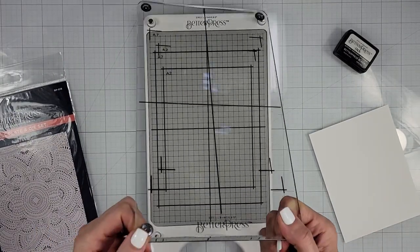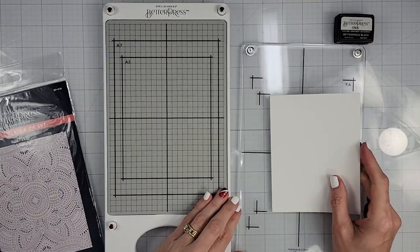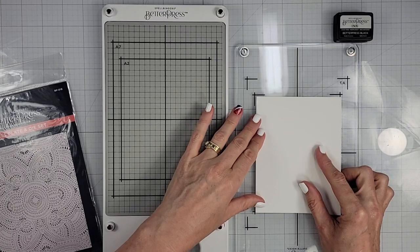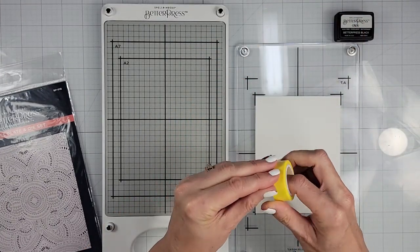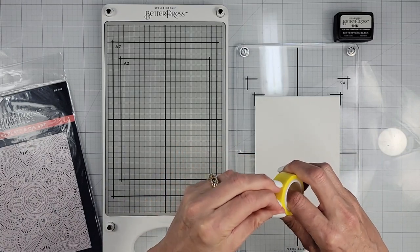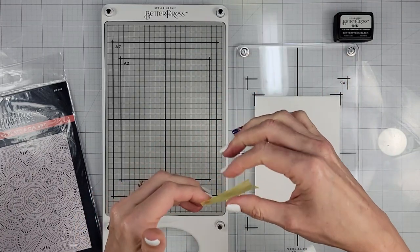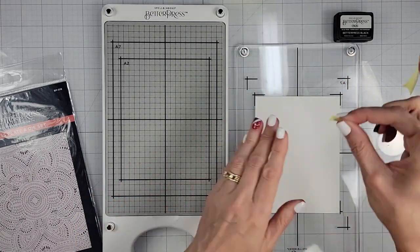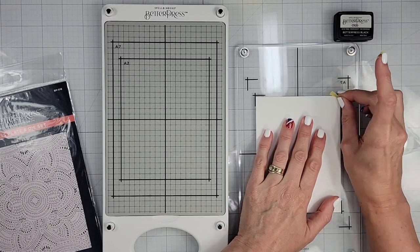We're going to take this off and set this to the side and I'm going to very carefully tape. I'm going to cut just a little bit, trim this panel down just a little bit.